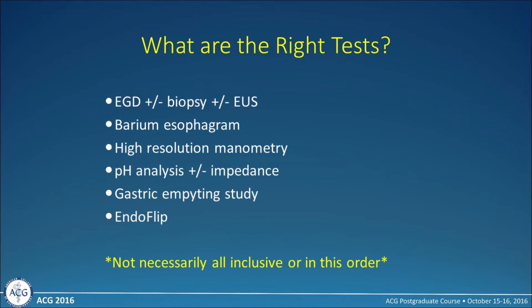When I see a patient I believe has a motility problem, most of them are getting at least one or two, if not all, of these tests at some point in their diagnostic pathway. They include an upper endoscopy with biopsy, potentially with endoscopic ultrasound, a barium esophagram, high resolution manometry, pH analysis with or without impedance, a gastric emptying study, and even EndoFLIP. But it's not necessary to include all of these or in this order.